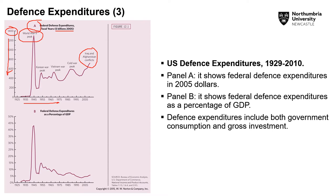Looking at panel A, the highest peak in defense spending in billions of 2005 dollars occurred during World War II, with the next highest peak occurring during the Iraq and Afghanistan conflicts starting around 2003. In panel B, showing federal defense expenditures as a percentage of GDP, the Iraq and Afghanistan conflicts are not the highest — World War II consumed almost 45 percent of GDP between 1939 and 1945, with the Korean War also being quite significant.